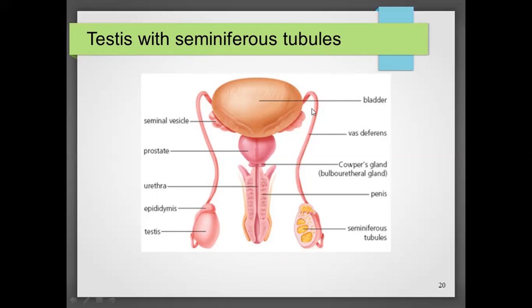The sperm moves through the vas deferens, passes over the urinary bladder, and reaches its lower part. Before it reaches the lower part, it joins with the duct from the seminal vesicle and is then known as the ejaculatory duct. It then passes through the prostate gland. Below the prostate gland, the urethra continues through the penis, and the penis is protected by external genitalia. It has a swollen portion at the tip called the glans penis.